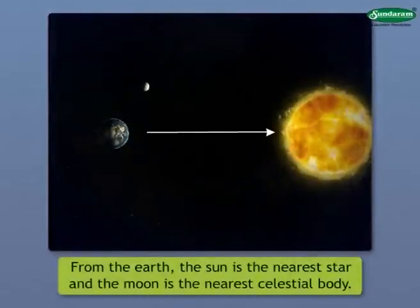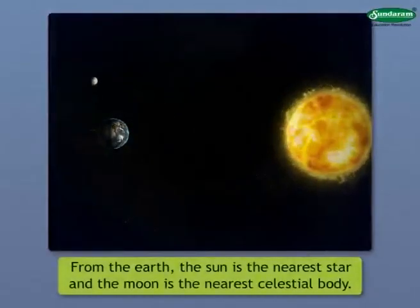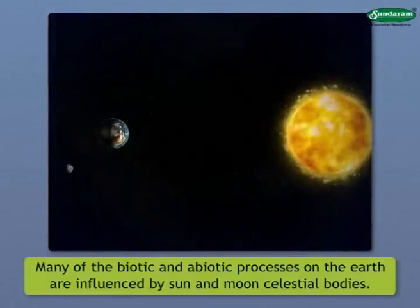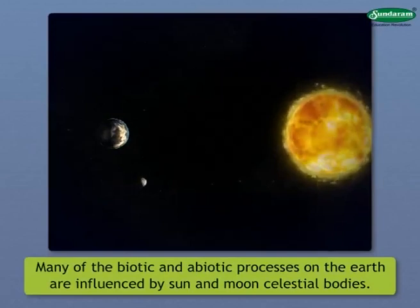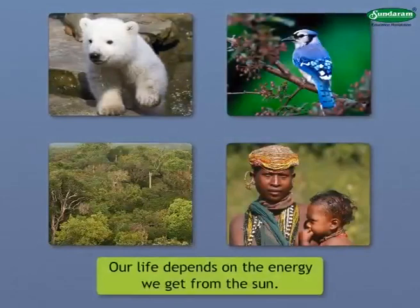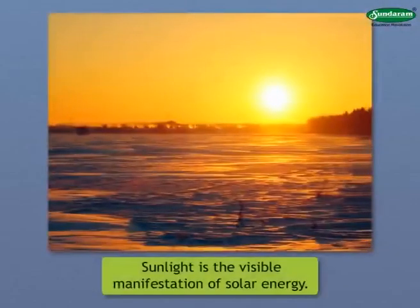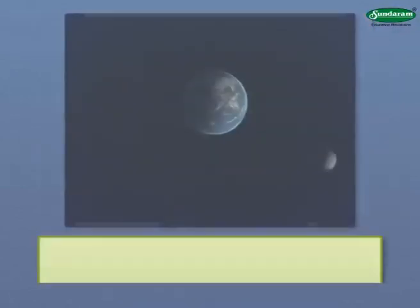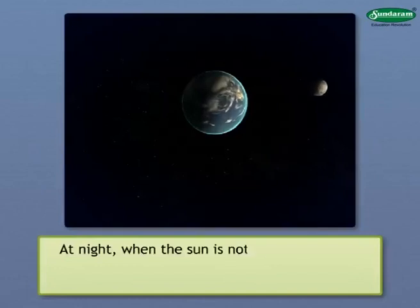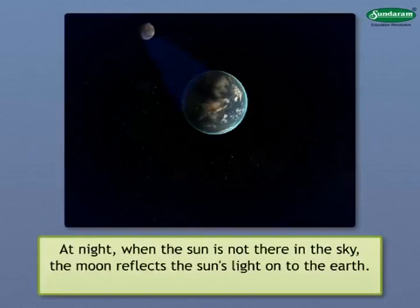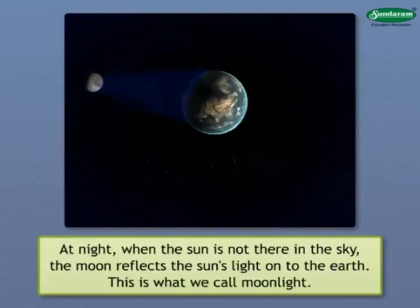From the Earth, the Sun is the nearest star and the Moon is the nearest celestial body. Many of the biotic and abiotic processes on the Earth are influenced by these two celestial bodies. Our life depends on the energy we get from the Sun. Sunlight is the visible manifestation of solar energy. At night, when the Sun is not there in the sky, the Moon reflects the Sun's light onto the Earth. This is what we call Moonlight.